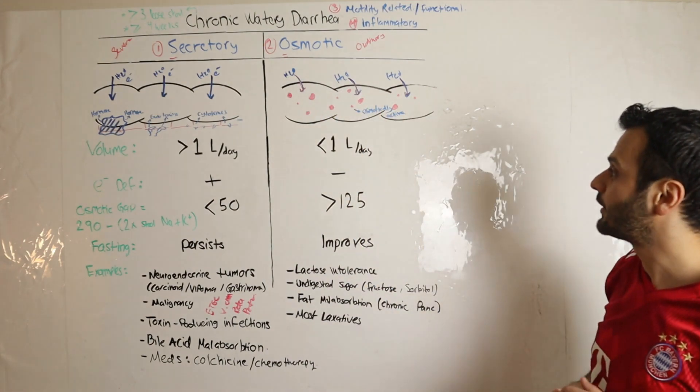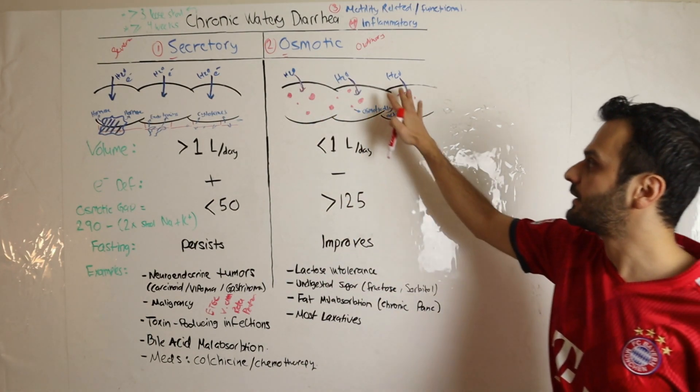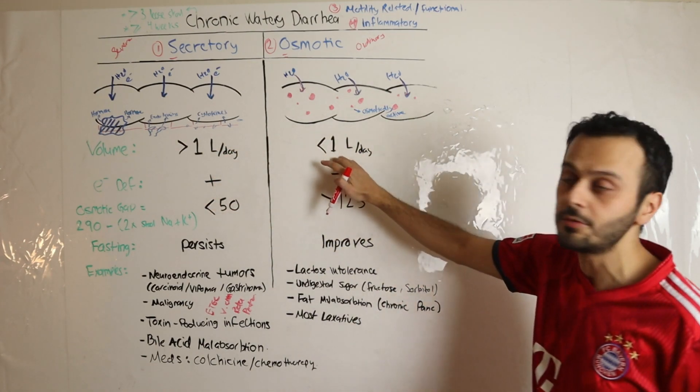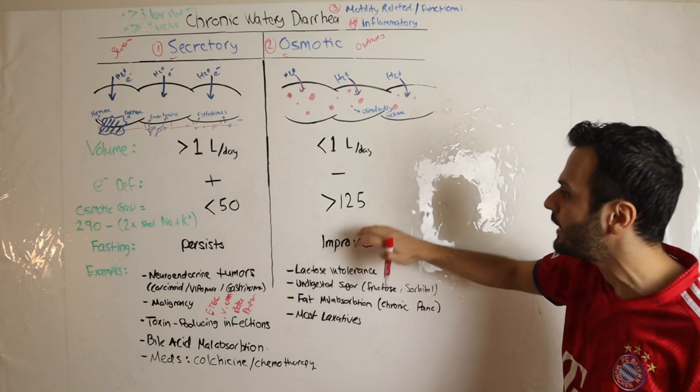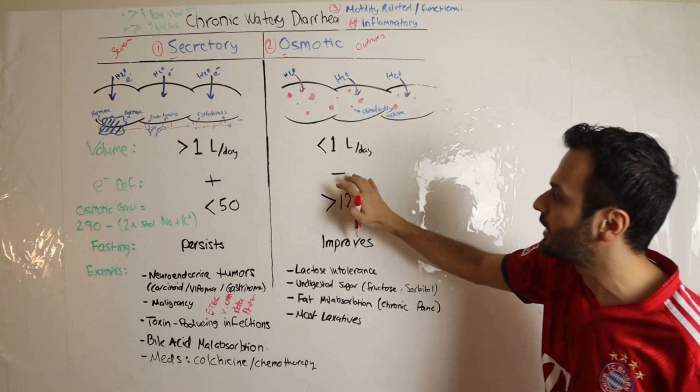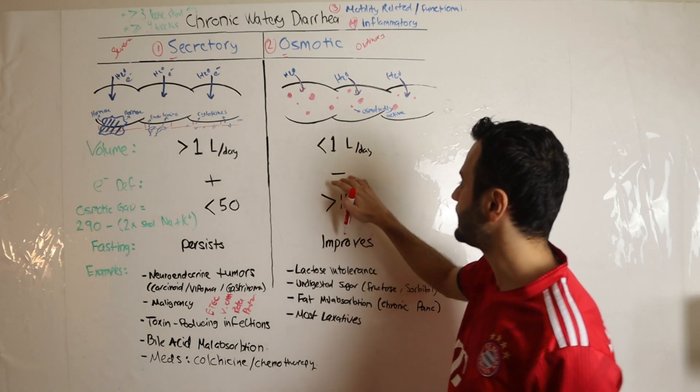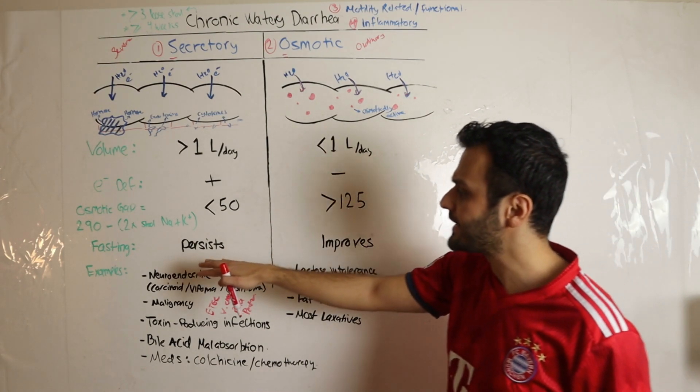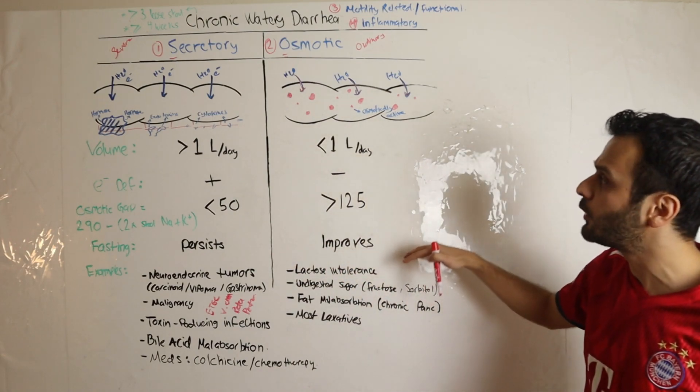It won't be in large amounts, not as much as what you see in secretory diarrhea – usually less than a liter per day. And because you don't have any efflux of electrolytes, electrolyte deficiency is rare in those patients. If you fast and don't ingest these nutrients, the diarrhea will actually improve.